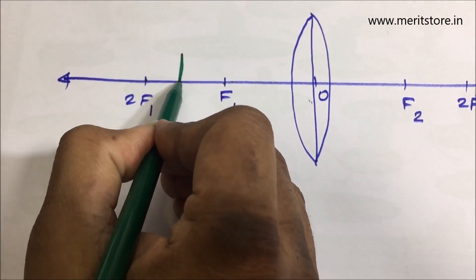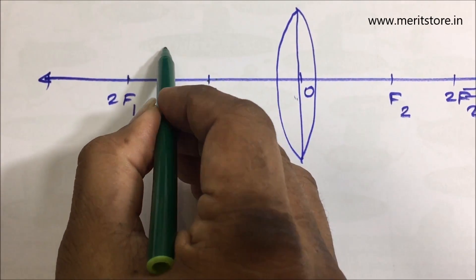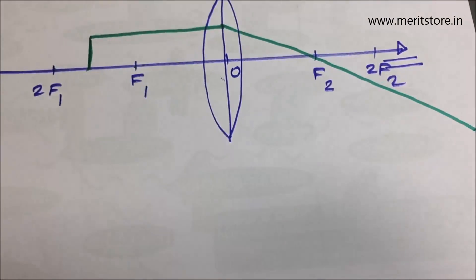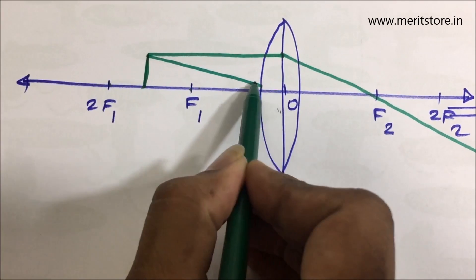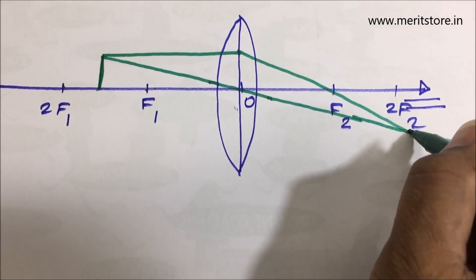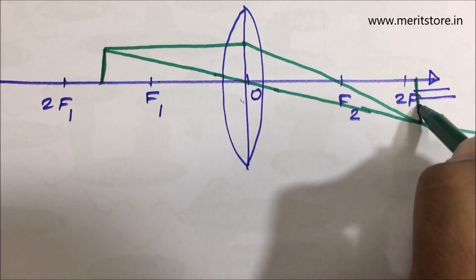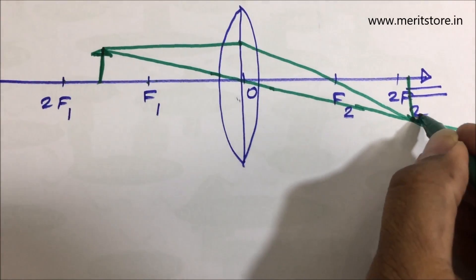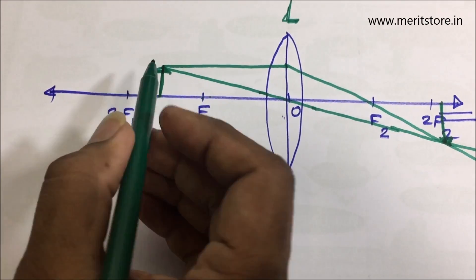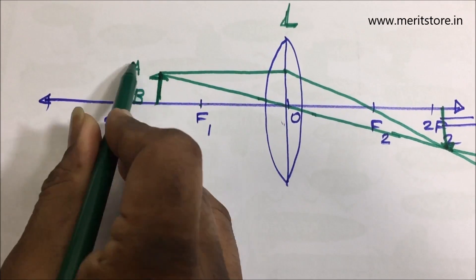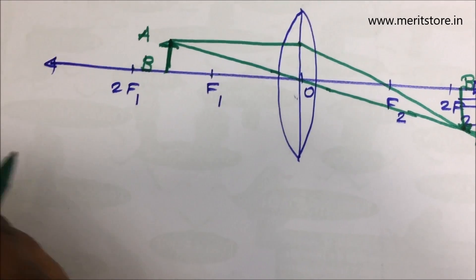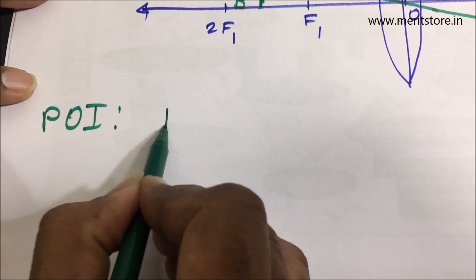The object is two lines tall. The first ray of light goes parallel to the principal axis and then through the focus. The second ray goes straight through the optical center undeviated. These rays meet at a point beyond 2f2. Label the object AB and the image B'A'.